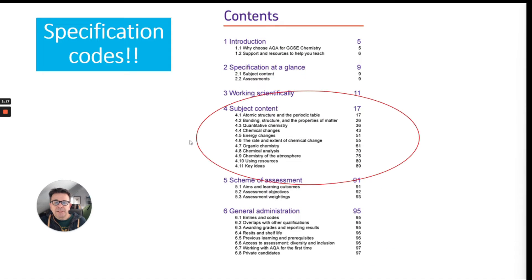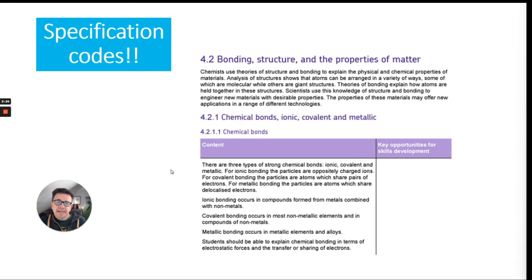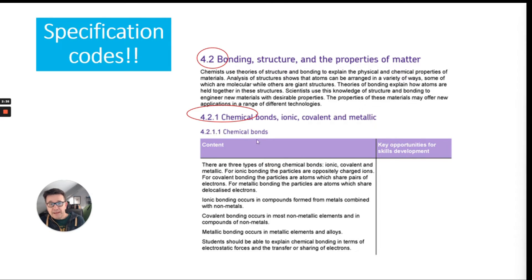When you look at the specification you'll notice it has subject content — everything you might be asked to learn. You can see what we mean by spec code: for example, 4.2, then 4.2.1, telling you what you need to learn — for chemical bonds, for example.